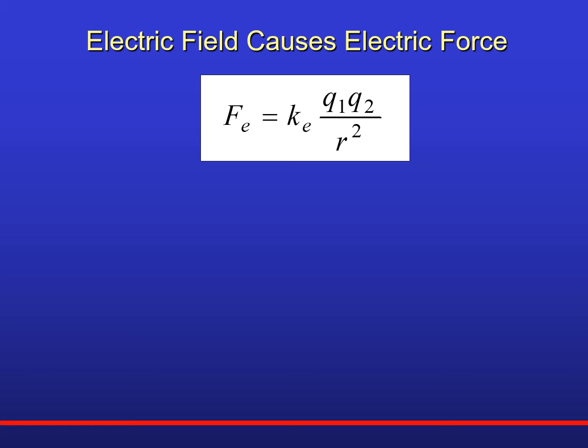So the idea is that two particles may not touch, but they exert a force on one another because the electric field of one particle contacts the other particle. Therefore, the electric field causes the electric force. Here's the formula for Coulomb's law — you can take this as a starting point, experimentally determined.